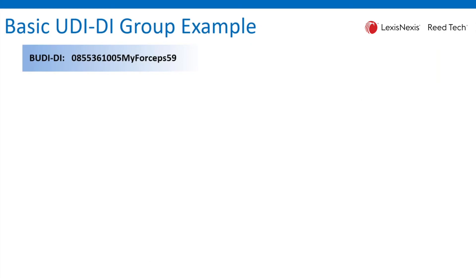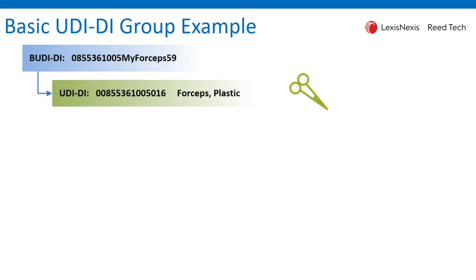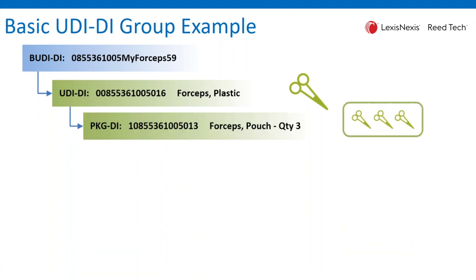If we were to create an example for a pair of forceps, I created an example here with a company prefix followed by FORCEPS5 as my model reference number, and then a 9 being the check digit. Inside this particular family, I might manufacture plastic forceps, and it would have a device identifier associated with it. It includes a package identifier, an indicator digit of 0 for this base product, followed by the company prefix and 01 for my item reference, and then 6 being the check digit. I may have this particular forceps placed in a pouch — maybe 3 in a pouch marked at that particular level. So this scenario needs another indicator digit, so I find 1 available and use that, and then the check digit changes as well.